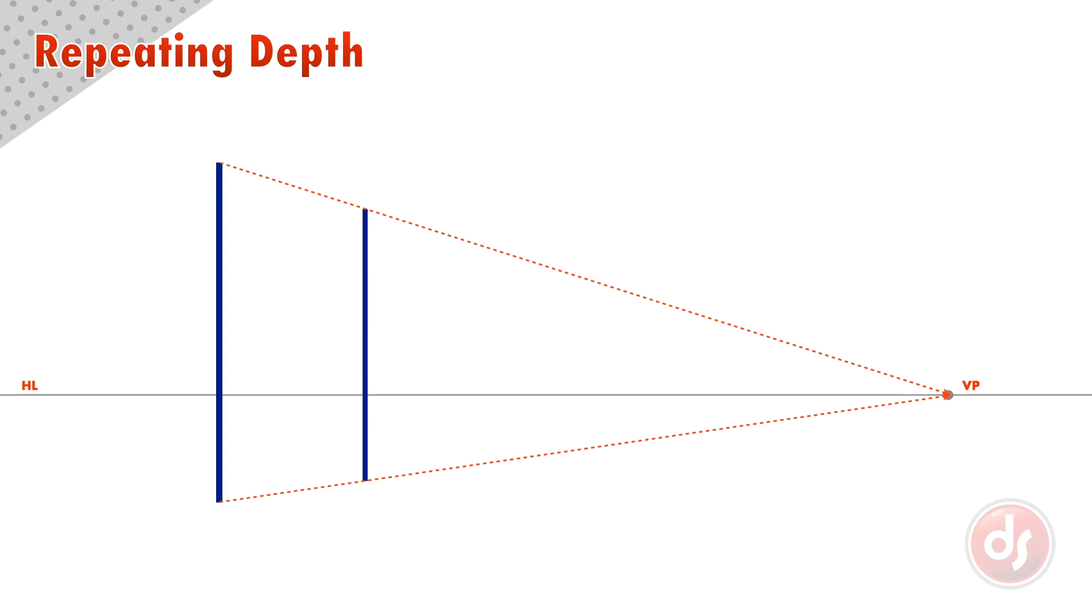The next step is to find the center point between the two poles. To do this, we need to use the x-trick, where we find the center of any rectangle by drawing a line from corner to corner. Once we have the center point, draw a line through it to the vanishing point.